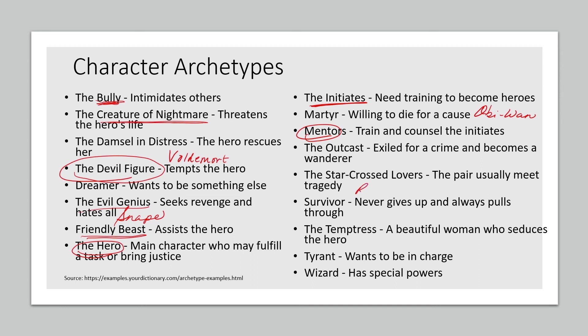If you ask anyone about star-crossed lovers, they're going to talk about Romeo and Juliet. These characters are so ingrained — this idea of young lovers who meet their death for the sake of love has become part of the fabric of what we all understand. The wizard has special powers that allow them to succeed, develop, and grow, and that gets us back to our situational archetype of good defeating evil.